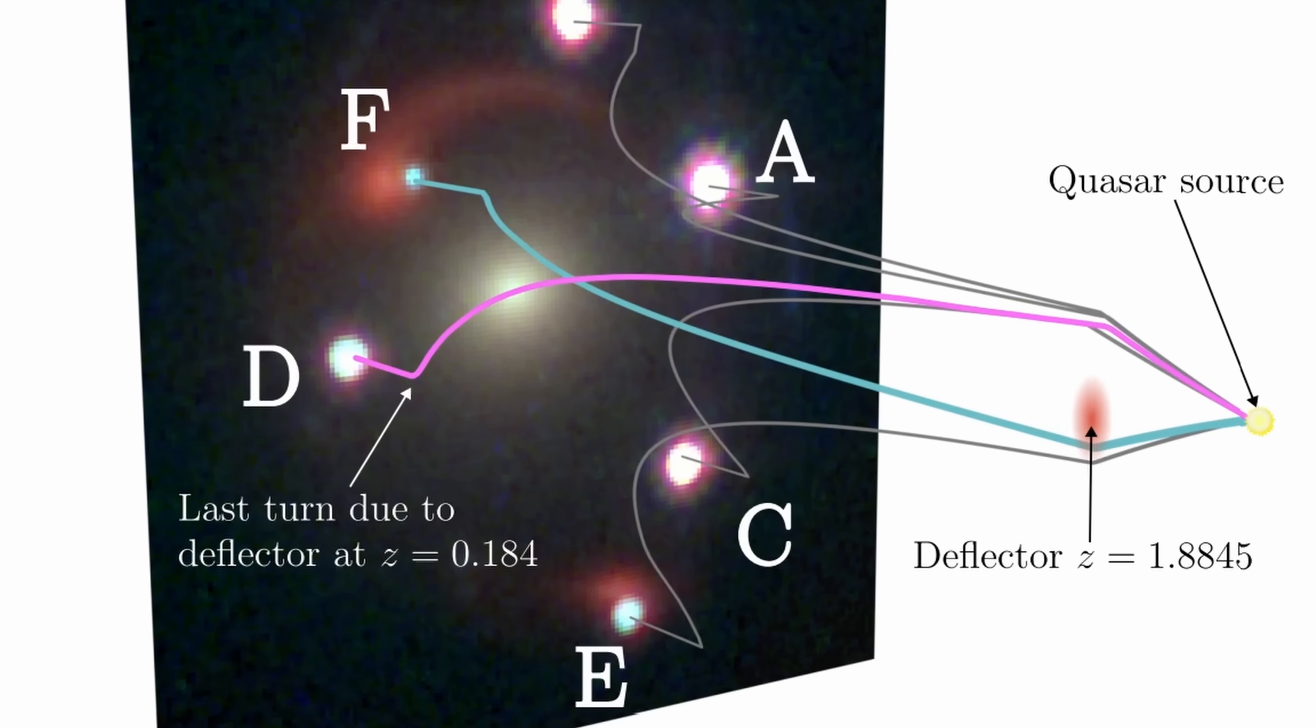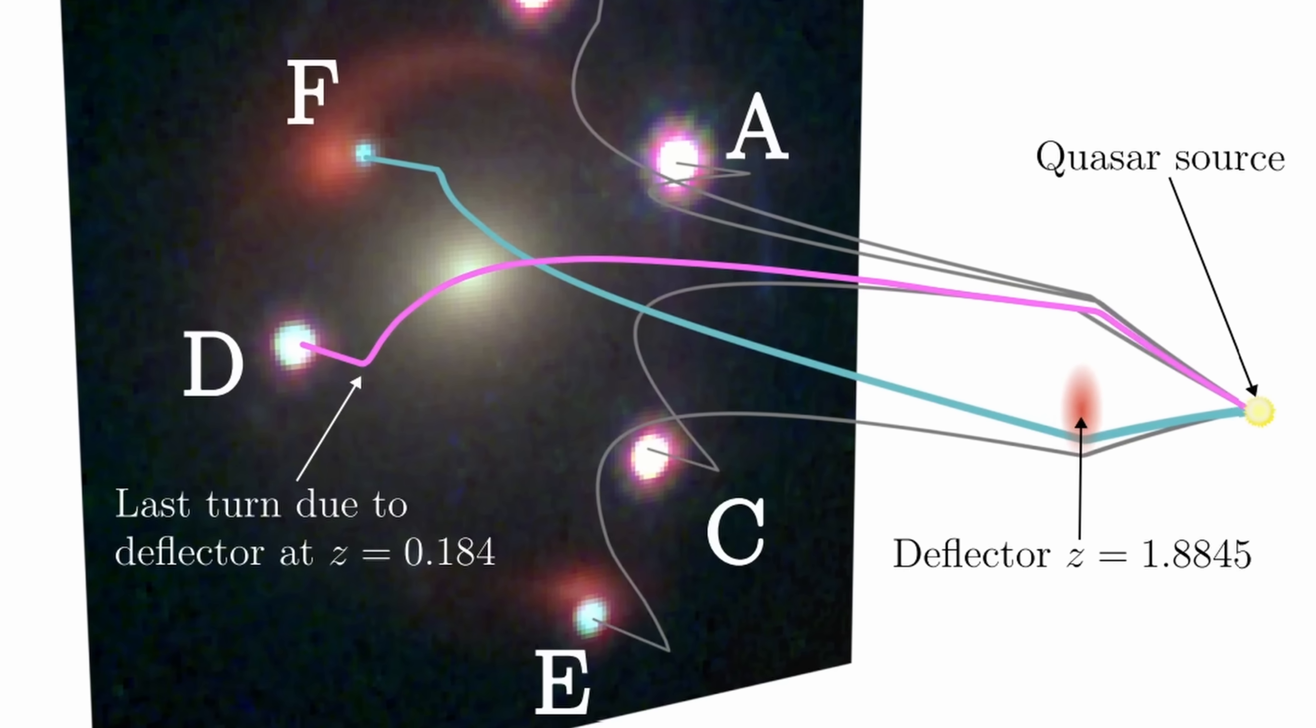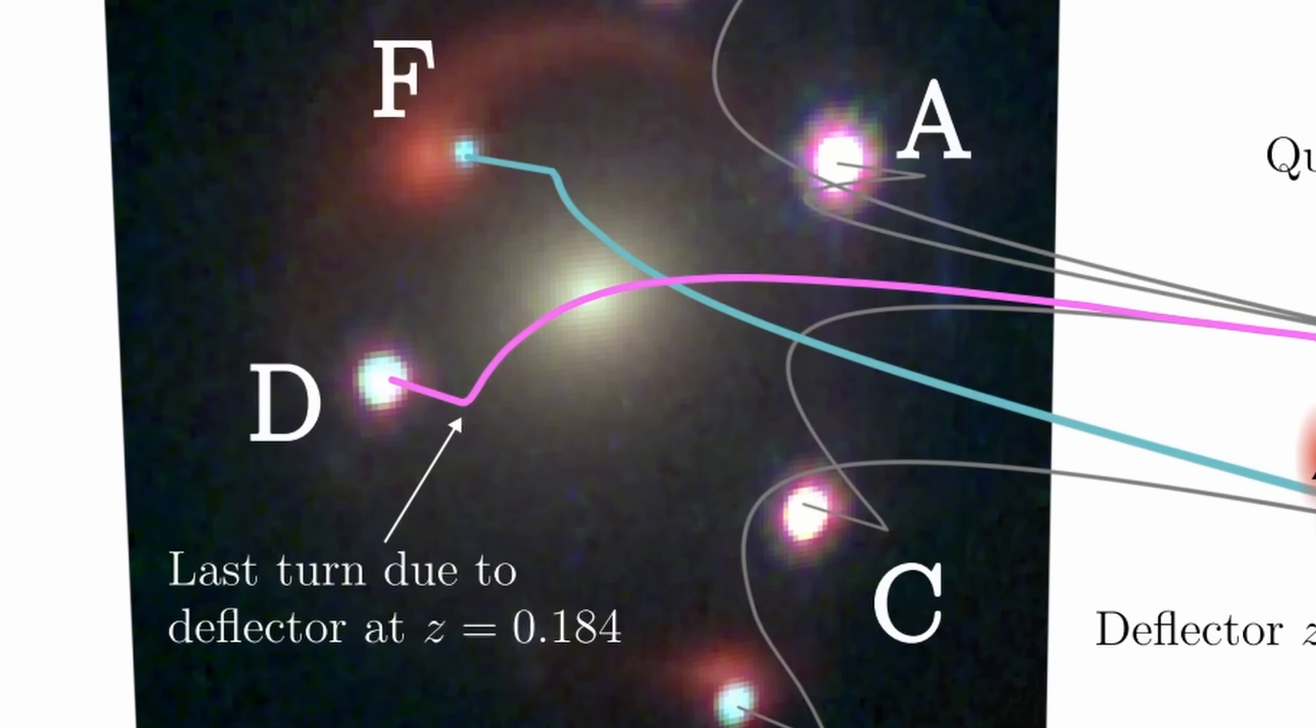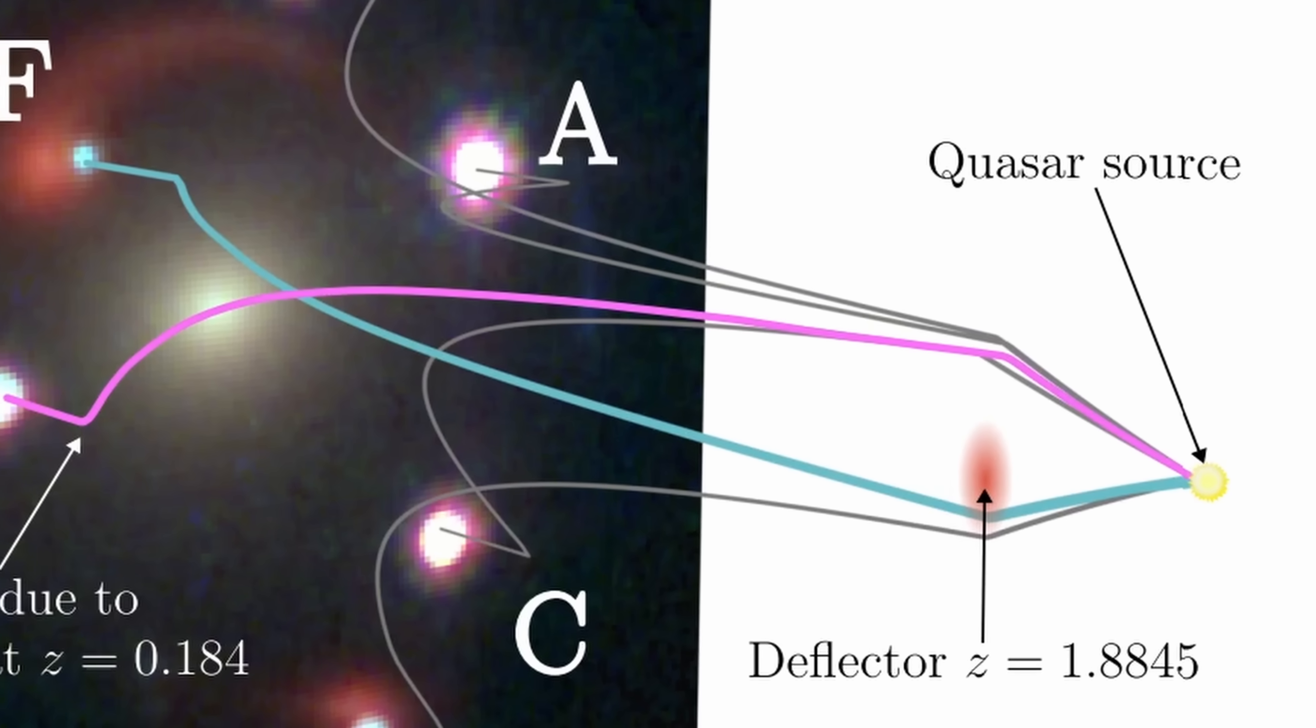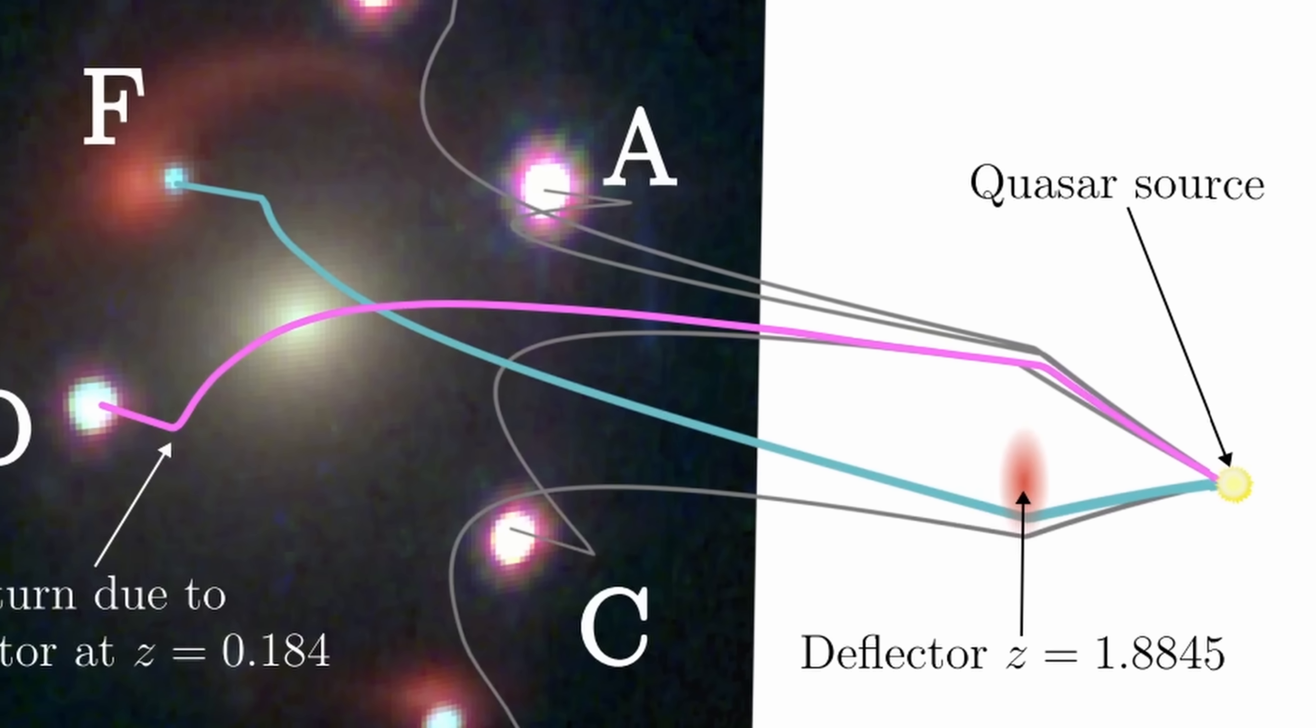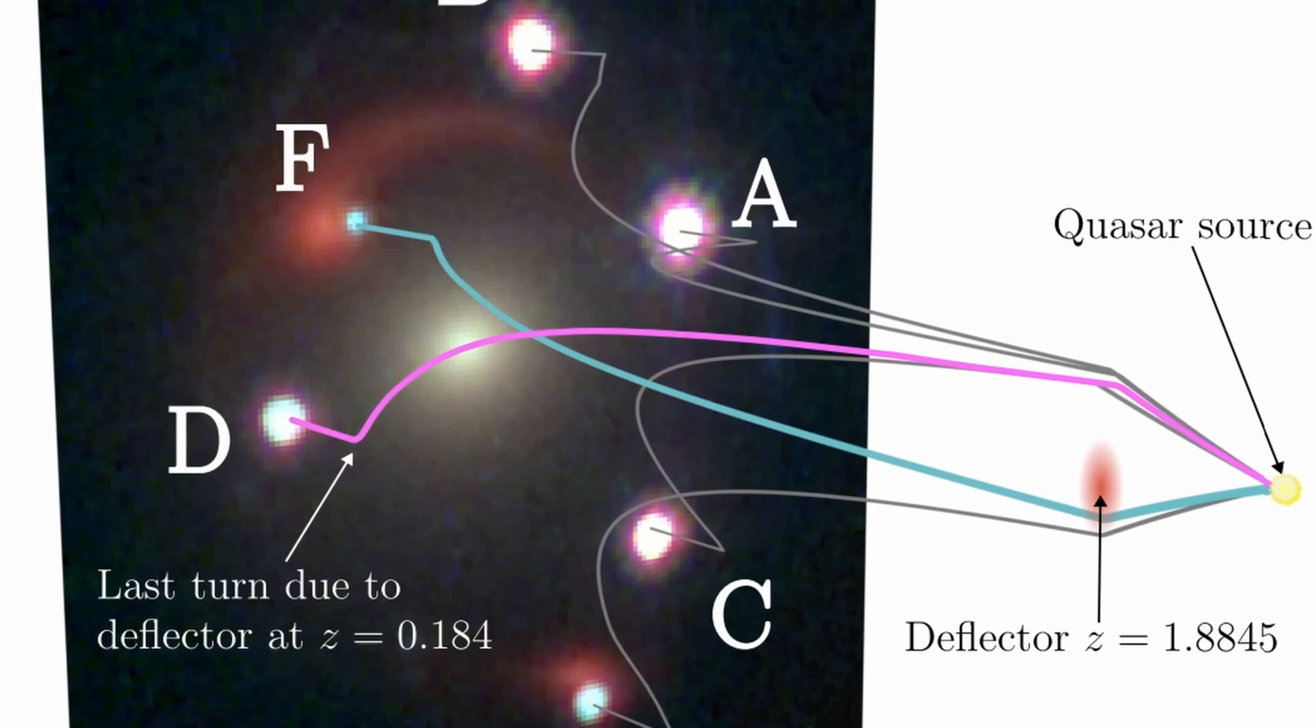And so in essence, if we were to try to imagine what all this looks like, we have the first deflector at a redshift of 1.88 and the second deflector that's much closer. Which essentially causes the light here to kind of go through an unusual zigzag forming these six points and a somewhat unfinished Einstein ring.